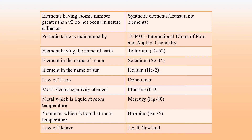The element with the name of Earth is Tellurium. Its symbol is Te and the atomic number is 52. The element named after the Moon is Selenium. The element named after the Sun is Helium.